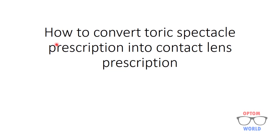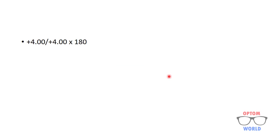In this video I will tell you how to convert a toric spectacle prescription into a contact lens prescription. First of all, what is a toric prescription? A toric prescription is one in which both sphere and cylinder are present — as in this case, the sphere is plus four with cylinder plus four at axis 180 degrees.